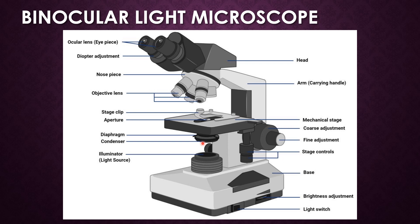The diaphragm controls the amount of light entering the condenser. Next is the aperture — the aperture measures the ability of light that is gathered and to resolve fine specimen details while working at a fixed objective-to-specimen distance.